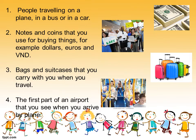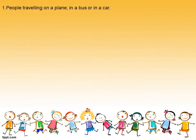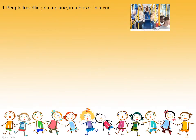Are you ready? Let's match the sentence with the correct picture. And if you can, let's write down the words. Let's go! You finished? Let's go to each sentence. Number one — people traveling on a plane, in a bus, or in a car. Which picture, everyone? Right! And the word is passengers.